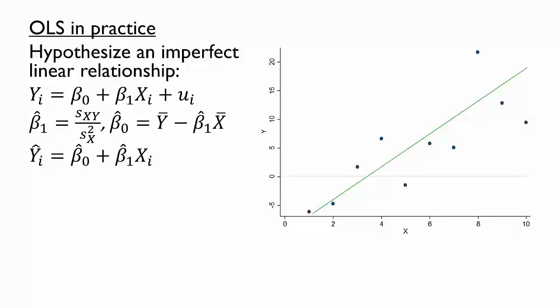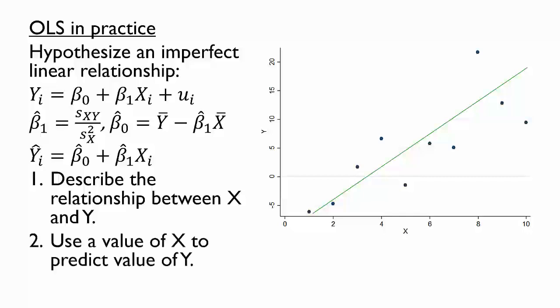We might use these estimates for one of two reasons. We could look at the estimated slope and or intercept to describe the relationship between x and y. Alternatively, we could use a value of x to predict the corresponding value of y.